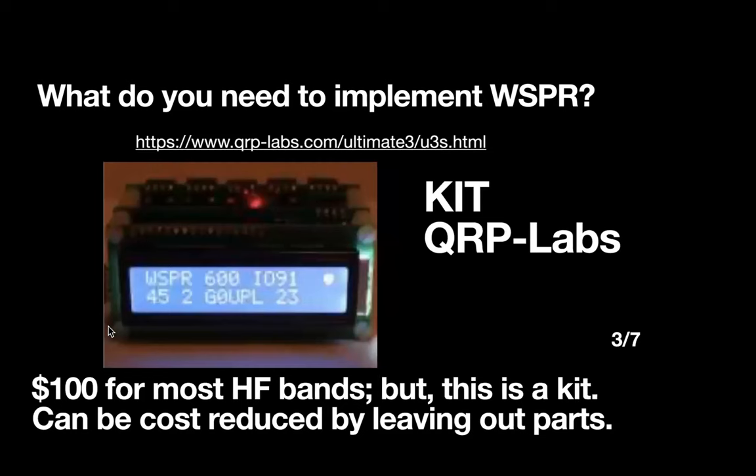If you like to build things, QRP Labs makes a nice kit that costs about $100. You can put this thing together and it covers most of the HF bands. If you only want a couple of bands, you can save a little bit of money. So that's going to cost you about $100 and a little bit of assembly work, but you have the satisfaction of putting this thing together.